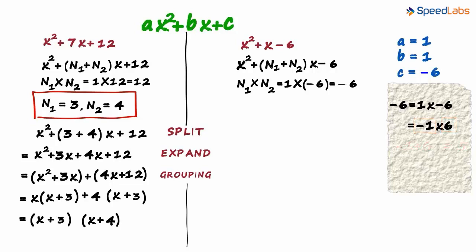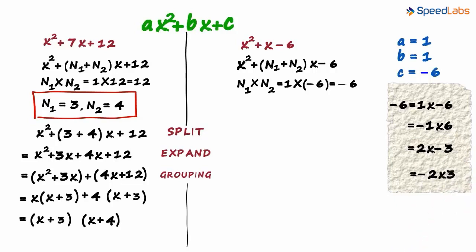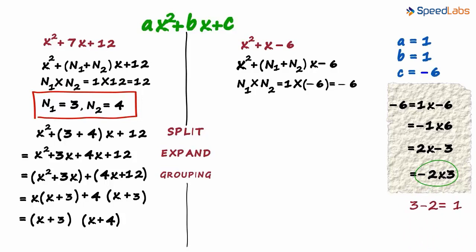How else can we write minus 6? We can write it as 2 times minus 3. Their sum is minus 1, so it's not even these two numbers. But wait, it can also be written as minus 2 multiplied by 3. And yes, the sum of these two numbers is 1. So finally we get our two numbers.